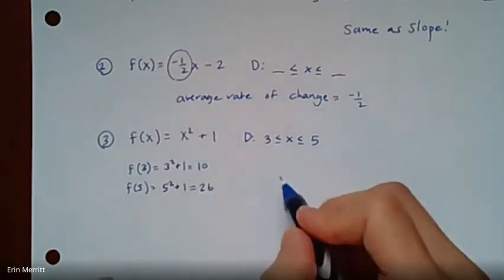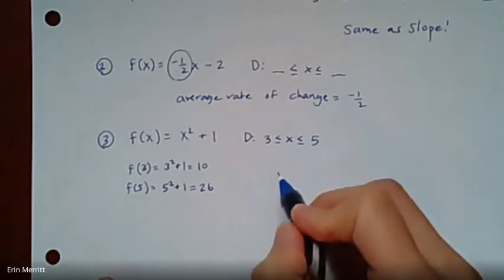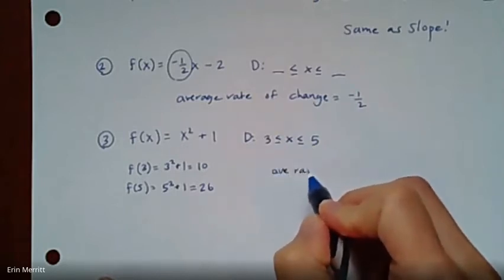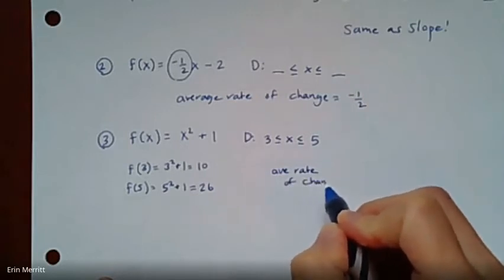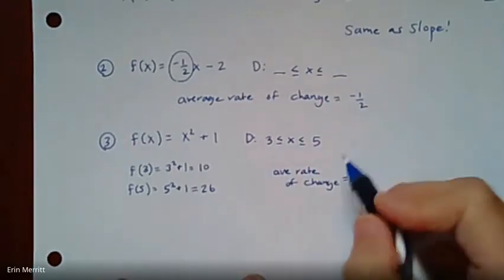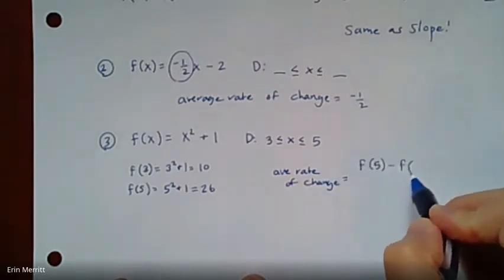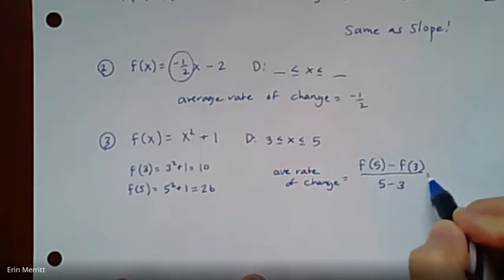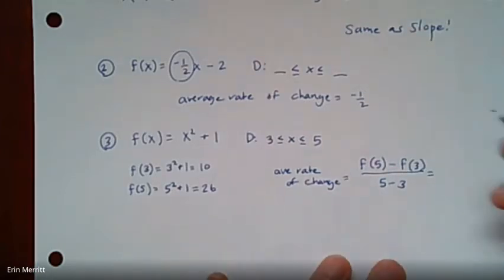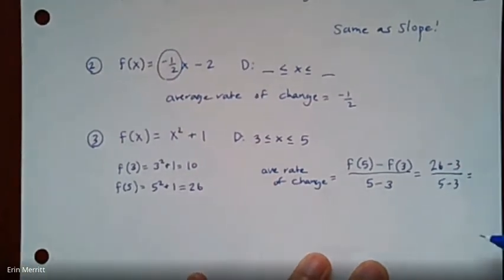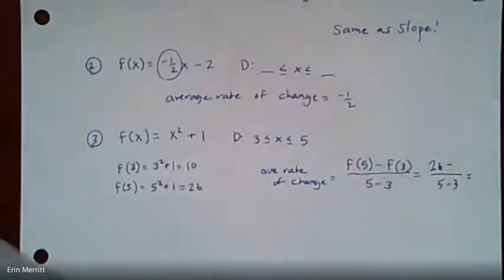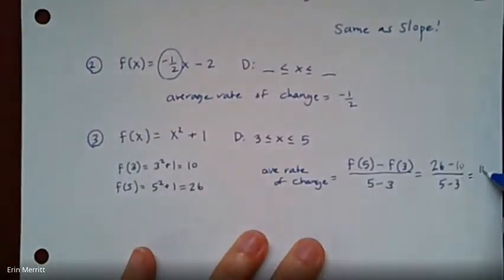And so then when we go to calculate the average rate of change, right? Just being a little lazy with my notation there, we would have f(5) minus f(3), and then all over 5 minus 3. So that's that new way to kind of show it. So it would be 26 minus... just kidding, f(3) was 10. Ooh, this is where I have my whiteout at home with me. See, sometimes it's prepped and ready. All right, that should be a 10. This will give me 16 over 2, and it comes out to be 8.